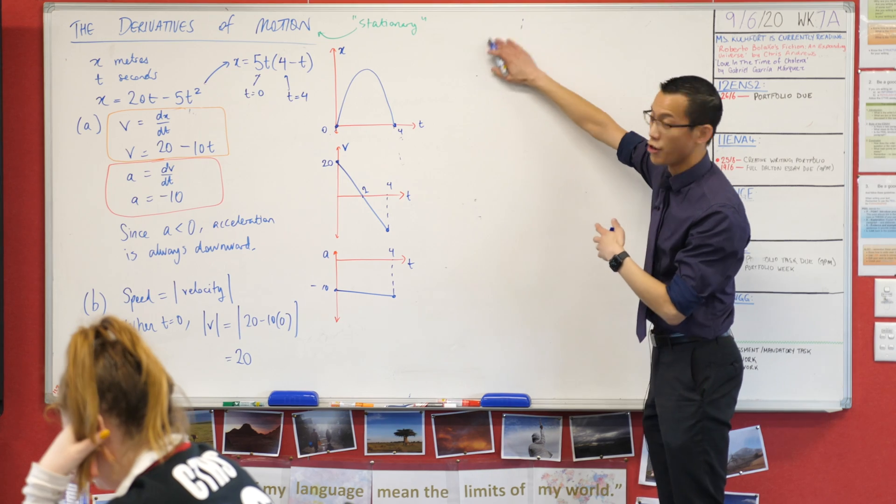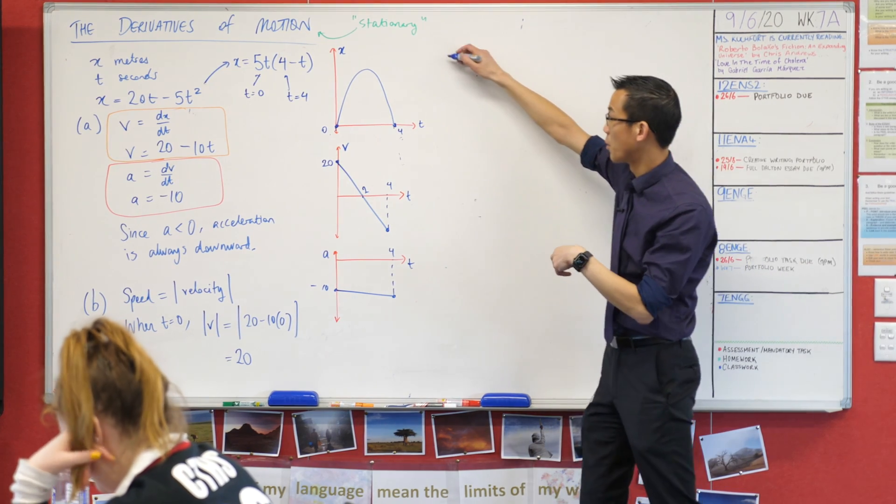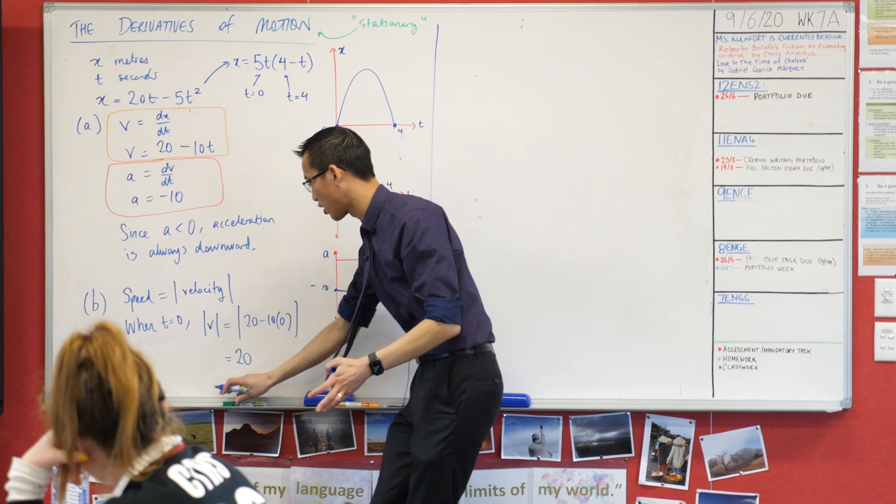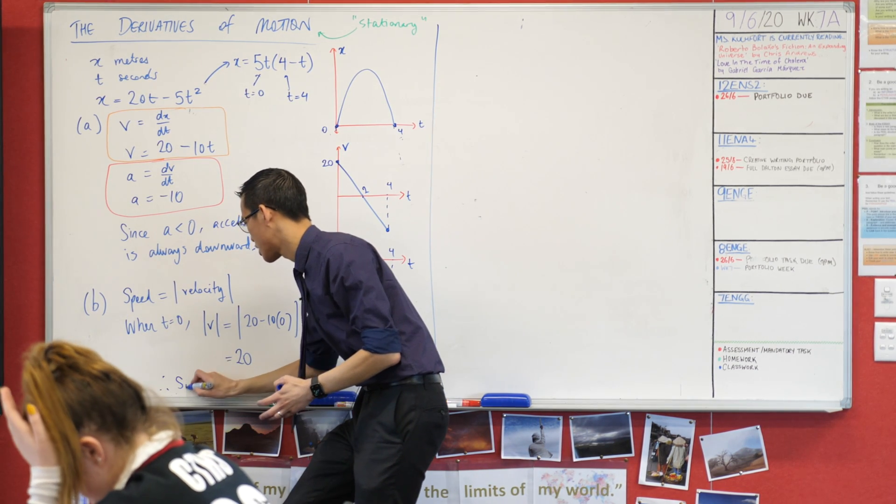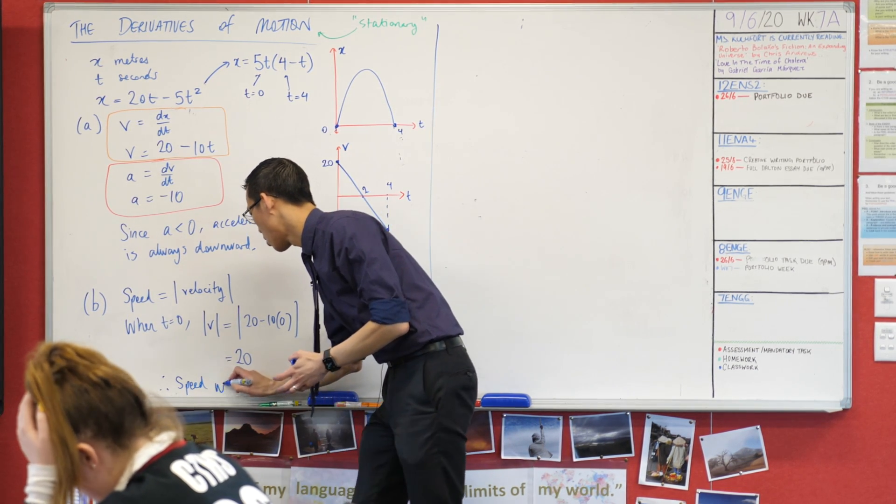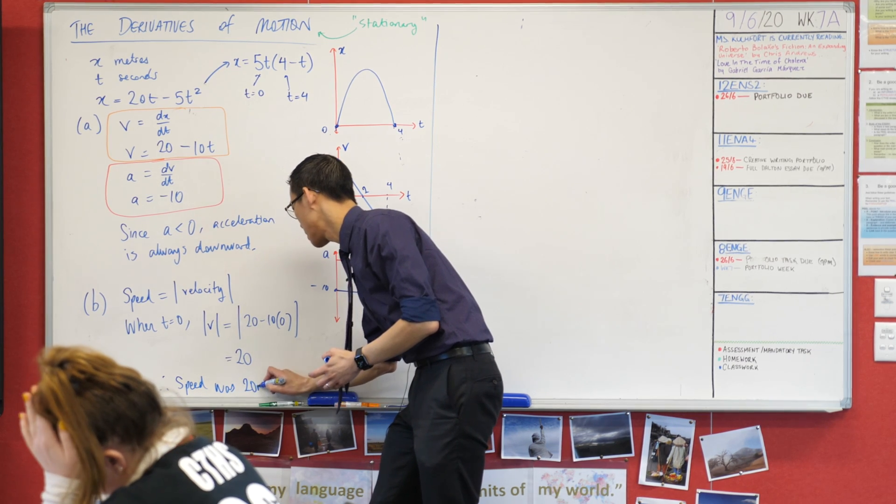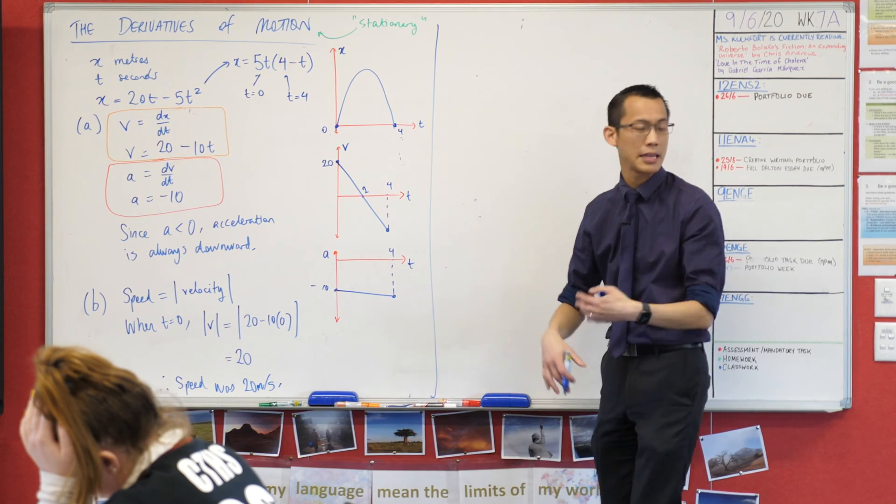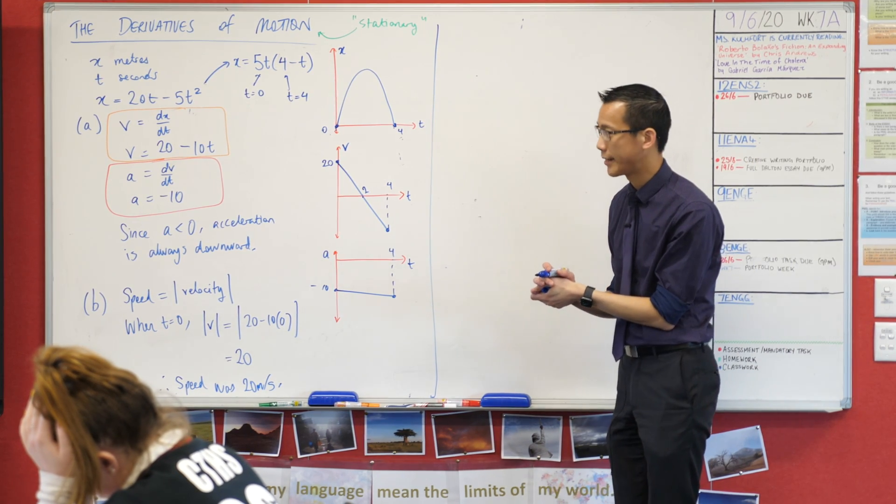I rubbed it off already, you know, frequently we use kilometers per hour but that's not what this question is. This question is meters per second. So I'm going to conclude, this is really important, I'm going to say speed was 20 meters per second. So it's really important you can conclude and use some actual words and the units that are relevant.